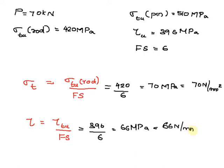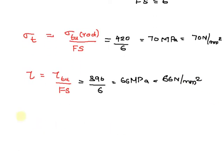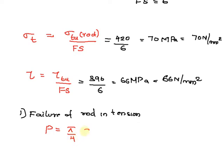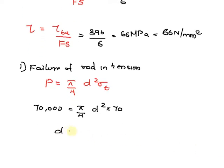Now coming to the first section where we are dealing with failure of rod in tension. Load P will be equal to pi by 4 into diameter d square into sigma T, so we can write 70,000 is equal to pi by 4 into d square into 70. From here we can calculate d as 35.7 millimeter, or approximately 36 millimeter.